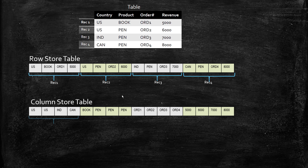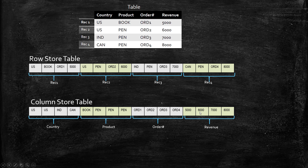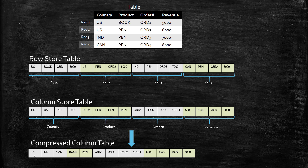Column store stores data in sequence of columns — after the country, then product, then order, then revenue. So basically, row store is a sequence of rows and column store is a sequence of columns. If you observe the column store table, you see there are two entries for the country US and three entries for the pen. But when we compress this table to eliminate duplicates, the compression table will be like this. When you see the column store table after compression, it eliminates the duplicates — the country block has only three entries and the product has only two entries.